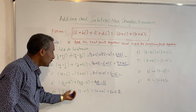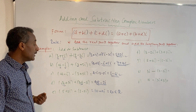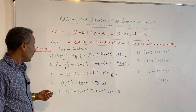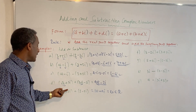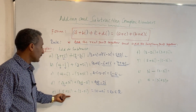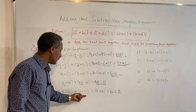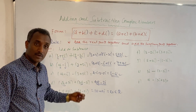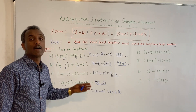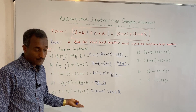The real part stays the same, and the imaginary part changes sign in the conjugate. The real number part is the same.